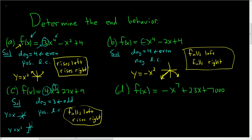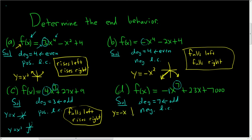The last one is probably the hardest. The degree is 7, so we have odd degree. The leading coefficient is negative 1, so we have a negative leading coefficient. The simplest functions with odd degree and negative leading coefficient are negative x or negative x cubed — both rise left and fall right. So this one rises left and falls right.